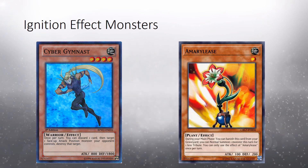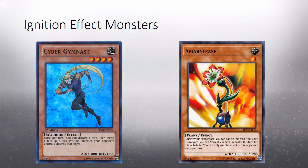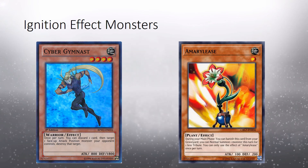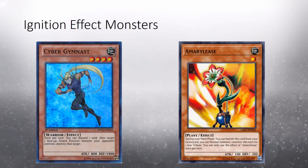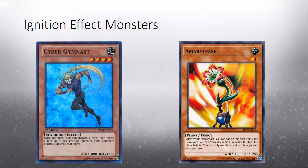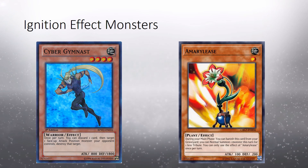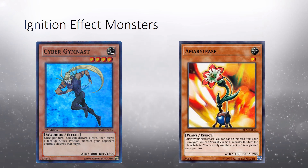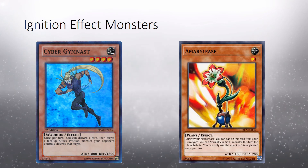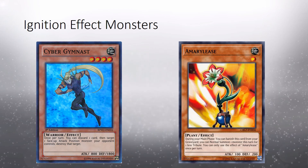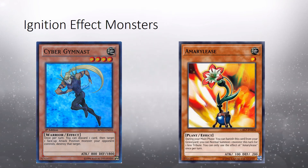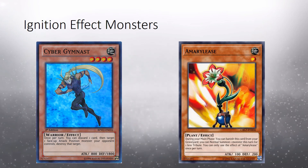Next we have Emma Release, a level 1 earth plant monster. Its effect reads: During your main phase, you can banish this card from your graveyard. You can normal summon one monster this turn for one less tribute. You can only use the effect of Emma Release once per turn. We can see that this card has the ignition effect indicators of during your main phase and you can. It has a cost of banishing this card from the graveyard. Therefore, in order to resolve its effect of normal summoning one monster for one less tribute, you would have to pay the cost of banishing Emma Release from the graveyard, removing it from your graveyard and out of play. Please note that if your opponent has a card that would negate the effect of an ignition effect monster, the cost would still have to be paid. This is because the cost is just a requirement for the effect to begin to resolve. A card that negates an effect would only negate the effect, not the cost that has to be paid.